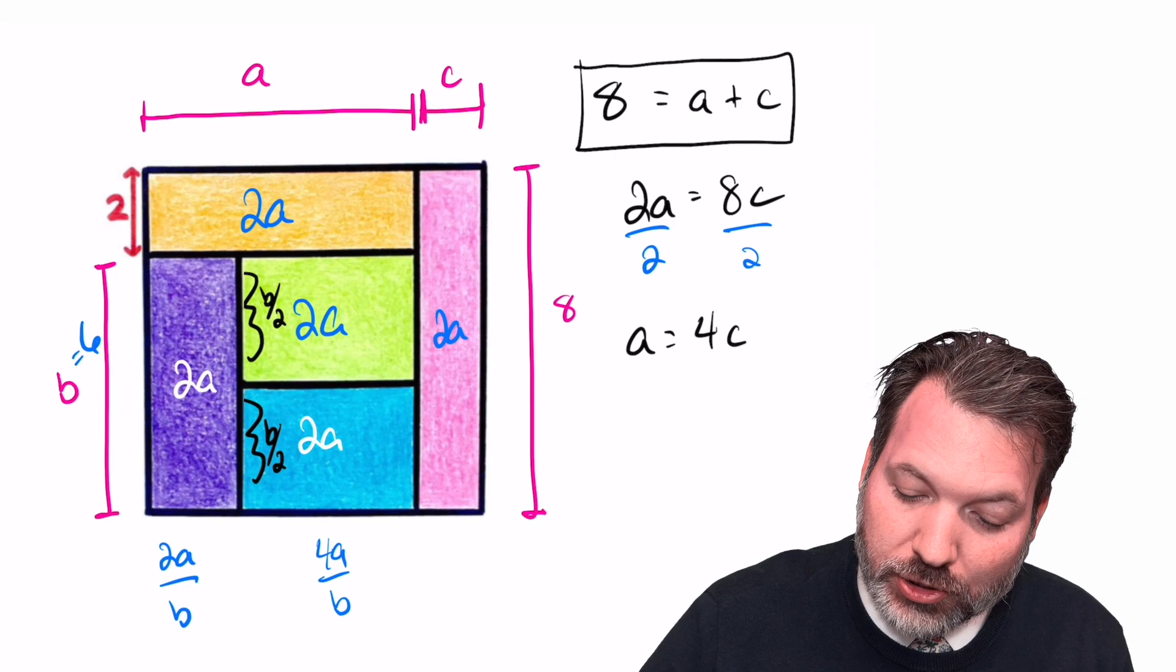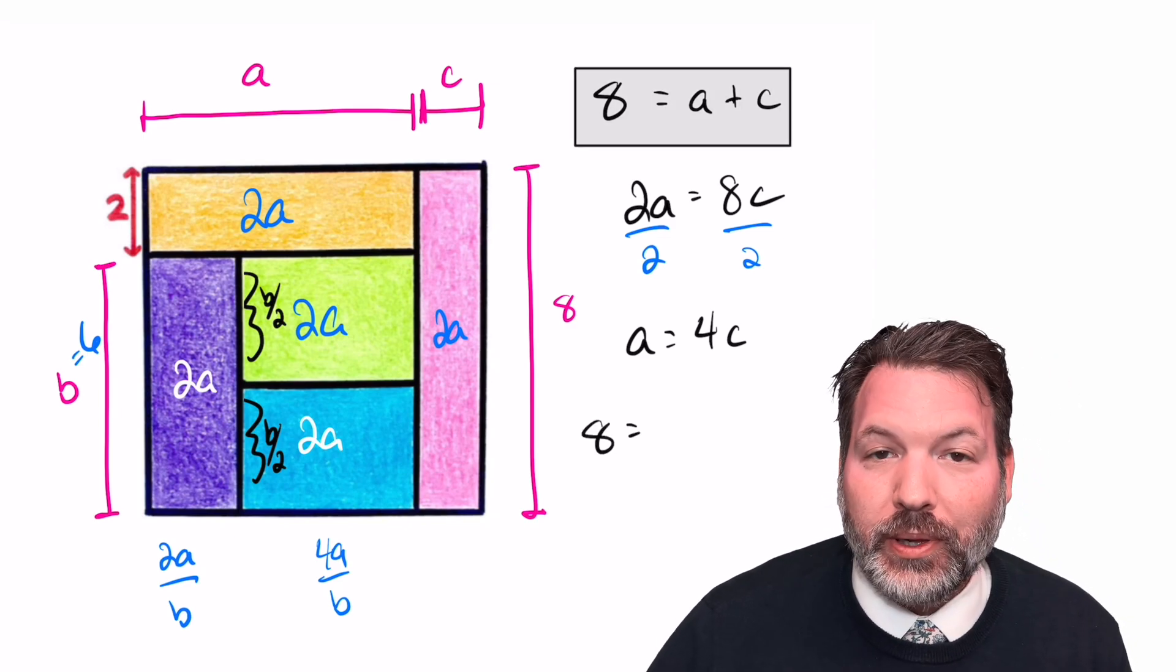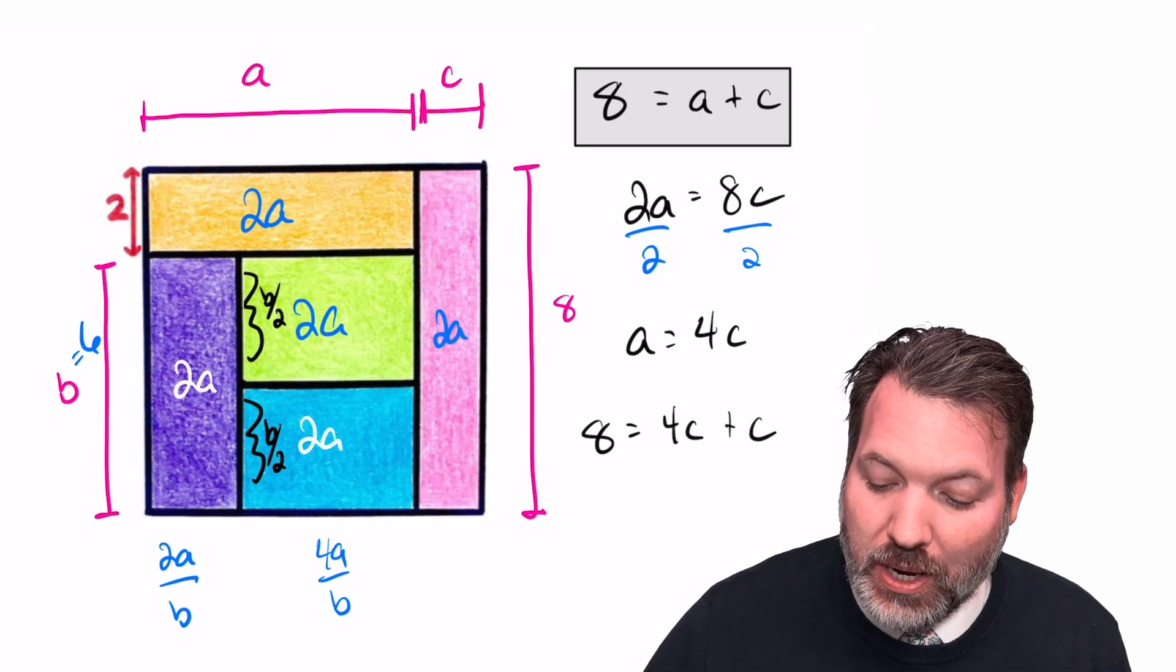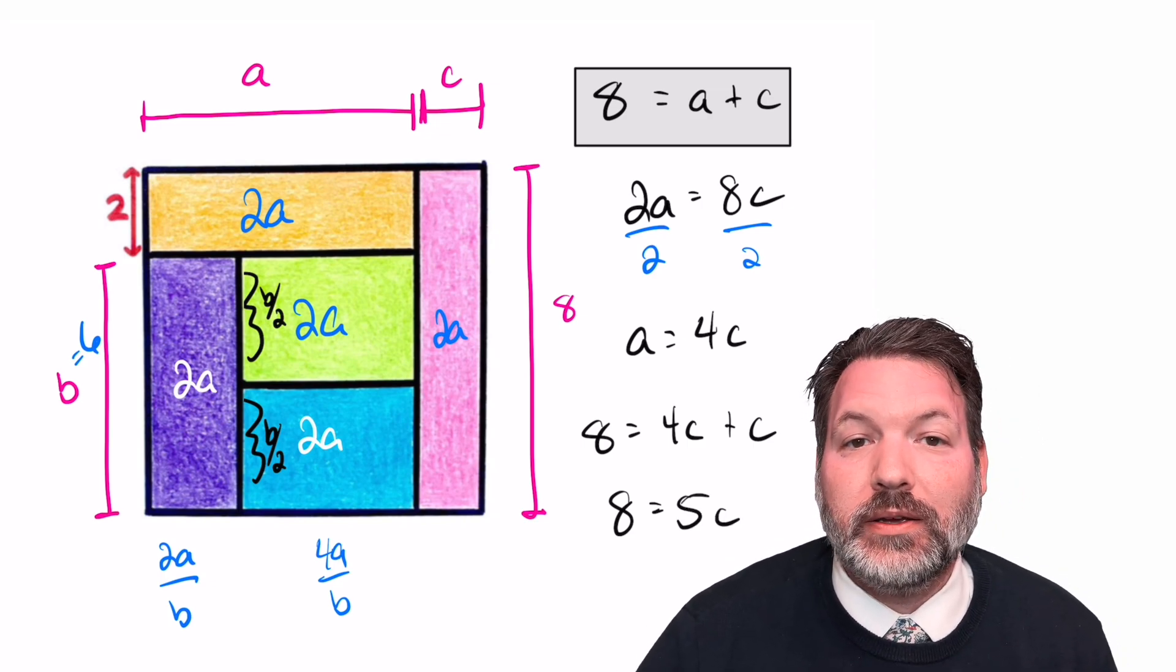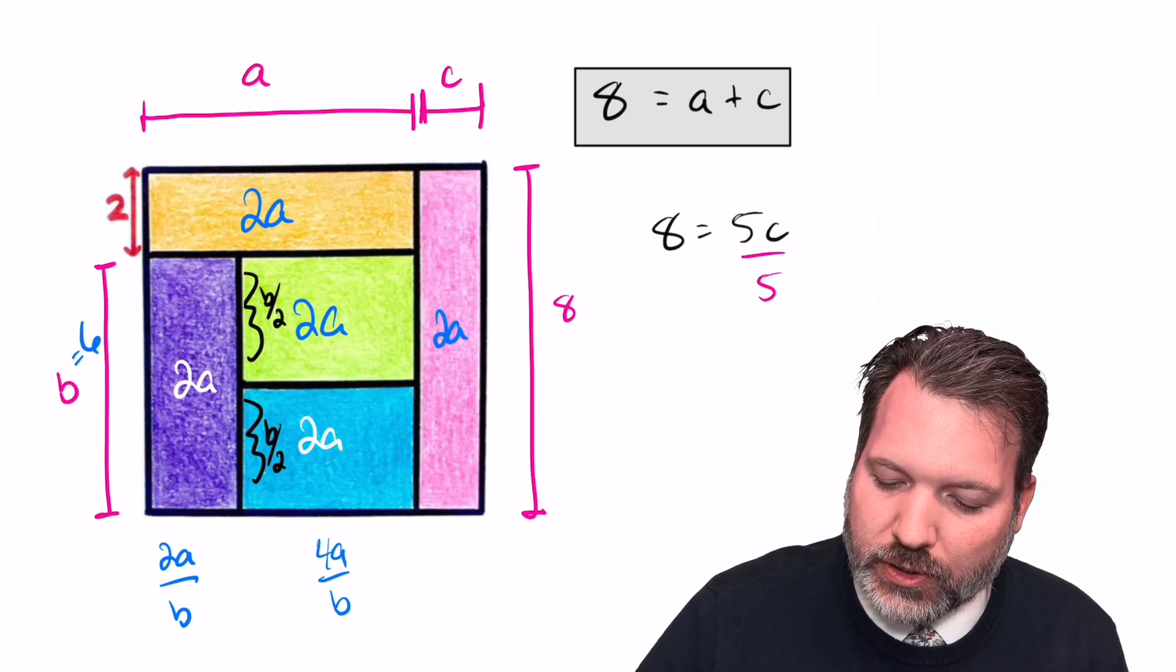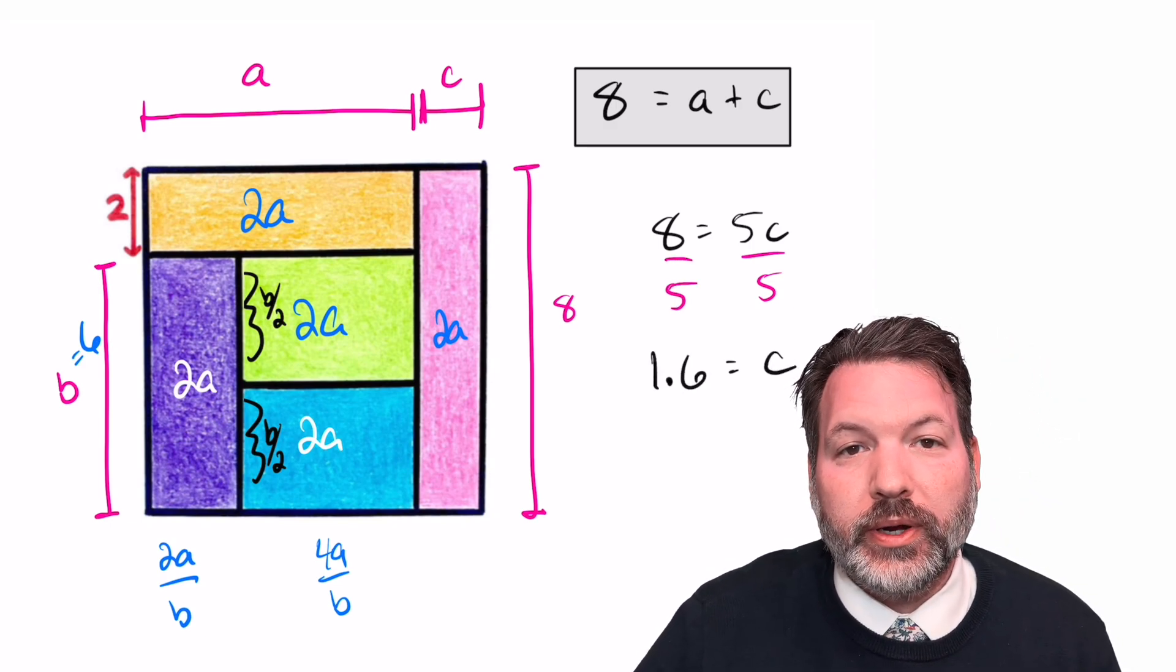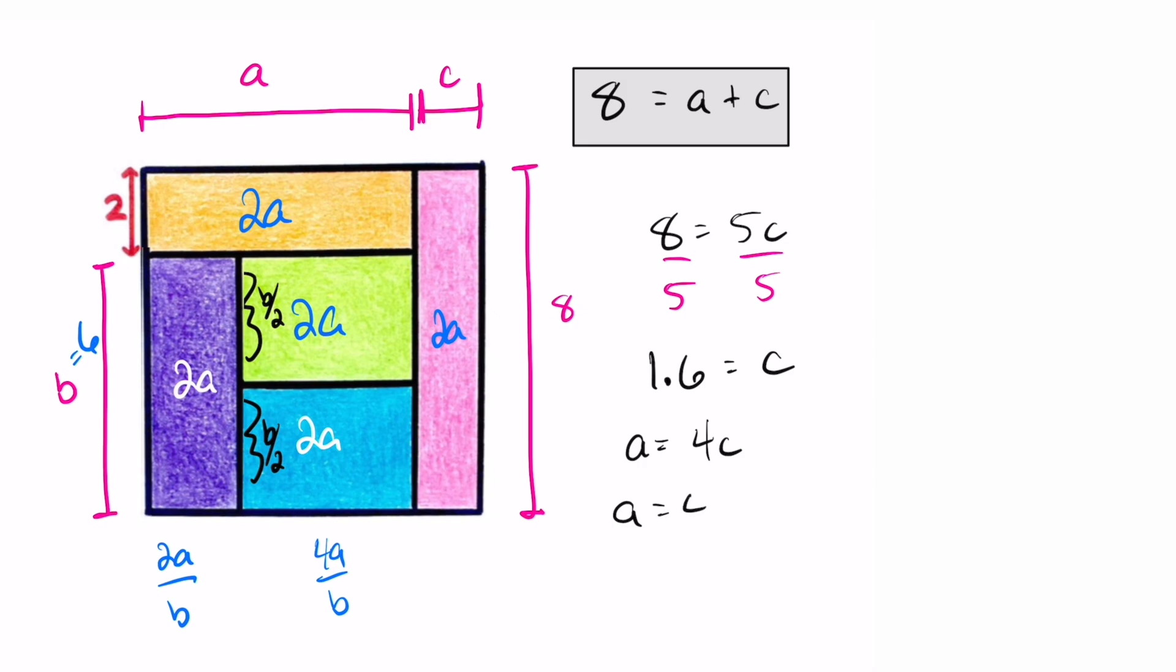So we can come back up to our relationship here, 8 equals a plus c, and we can actually replace a with the 4c that we know it's equal to, meaning 8 must actually be the same thing as 4c plus c makes 5c. From here, of course, divide by 5, we can figure out that c is equal to 1.6. And recall, the way we got here is we knew that a was equal to 4c. So in fact, of course, a must be the same thing as 4 times 1.6 equals 6.4.